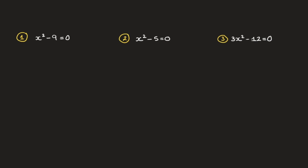In this video we learn how to solve quadratic equations like the ones we see here using the difference of two squares formula. In a previous video we had seen that any expression that could be written as a squared minus b squared can be written in factored form as a plus b times a minus b. Throughout this video I'll be referring to this as the difference of two squares formula. Now let's see how this can be used to solve the first equation.